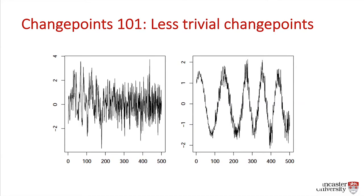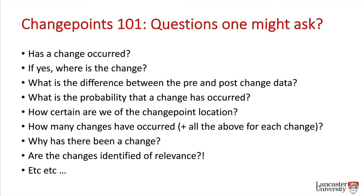The questions we ask are: has a change occurred? If so, where is that change in the data sequence? What is the difference between pre- and post-change data? Can we assign a probabilistic value to the probability that a change occurred, or how certain are we of that location? That's just for one change point — for a long sequence with many changes, we'd ask all of those questions for each change. And underlying that, why has there been a change? Increasingly, the question I focus on is: are those identified changes actually relevant? Statistical significance doesn't necessarily mean practical interest.